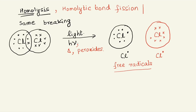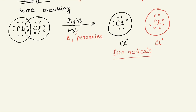How do we represent this — do we keep drawing electron circles? That would be very cumbersome. So when a bond between two chlorine atoms undergoes homolytic bond fission, each one takes one electron of the shared pair. The arrow used here is called a fish hook arrow. Each chlorine atom takes one electron, and the final product is represented as Cl· and Cl· — called free radicals.